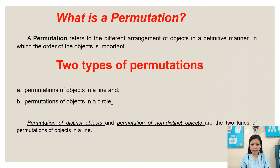What is a permutation? A permutation refers to the different arrangement of objects in a definitive manner in which the order of the objects is important.